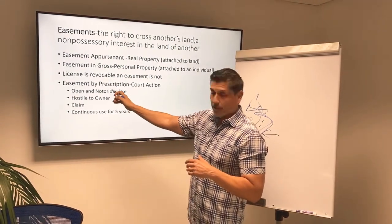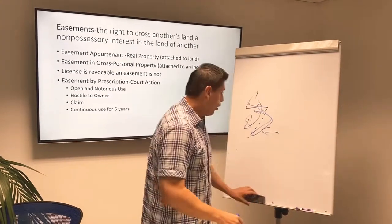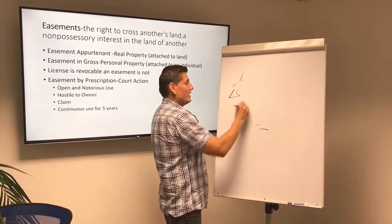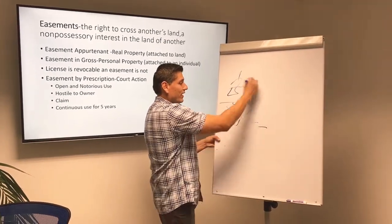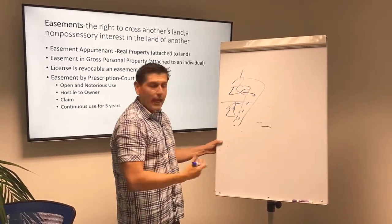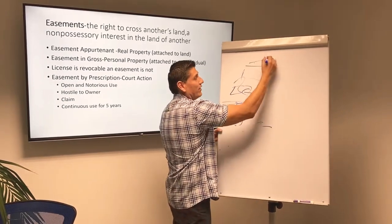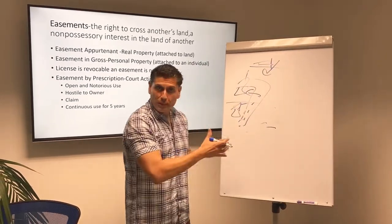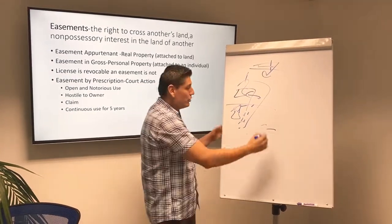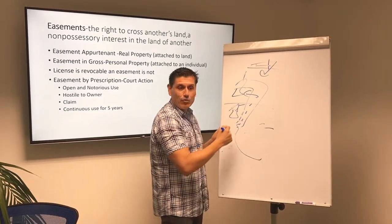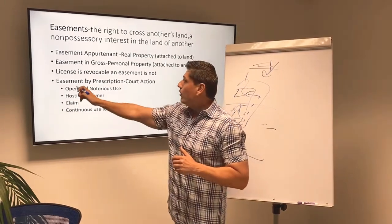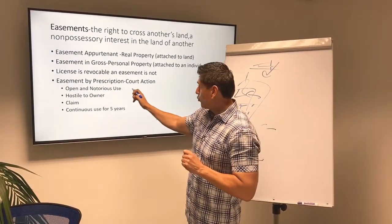The third easement to know is: what if you don't have an easement and you need one? Your house is here and there's another house there, and the only way you can get to your house is by crossing that neighbor's property. Maybe you were accessing it from another street, and now the city has done away with that street. So the only way you can get to your house is by using his driveway, but he's not letting you — you may be able to go to court and get what's called an easement by prescription.